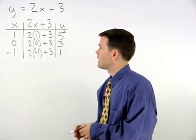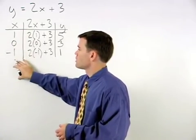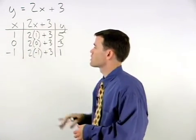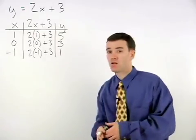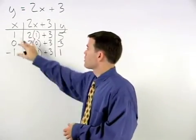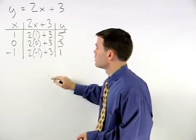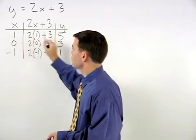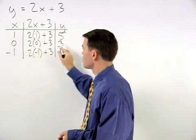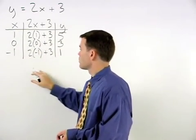I would always choose at least 3 values to plug into the equation for x. Notice that we now have 3 points that we can use to graph this equation. Our points are 1, 5, 0, 3, and negative 1, 1.